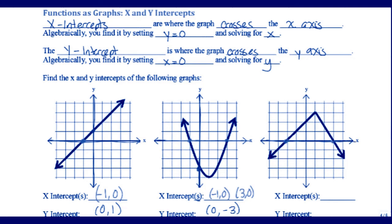My function crosses twice at negative two comma zero and at three comma zero. My graph crosses the y-axis once at zero comma three.